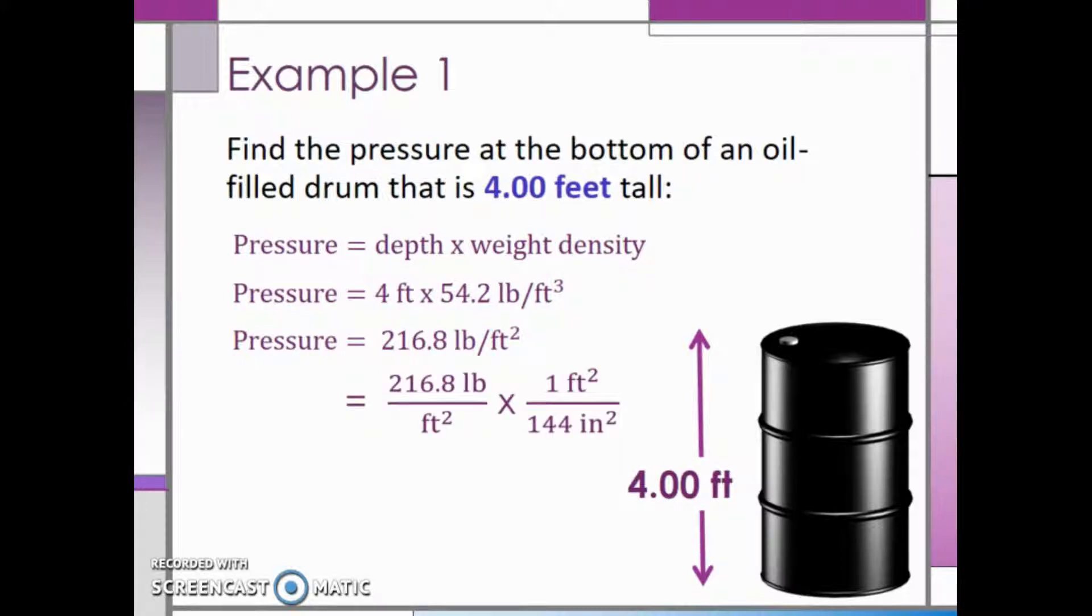Since we have square feet on the bottom, we will put one square foot on the top in the conversion factor. Then we can look at the table I gave you at the beginning of the semester to find a conversion between square inches and square feet. There are 144 square inches and one square foot, so we have 144 square inches in the bottom. Crossing off the square feet and dividing, we see that the pressure is about one and a half pounds per square inch.